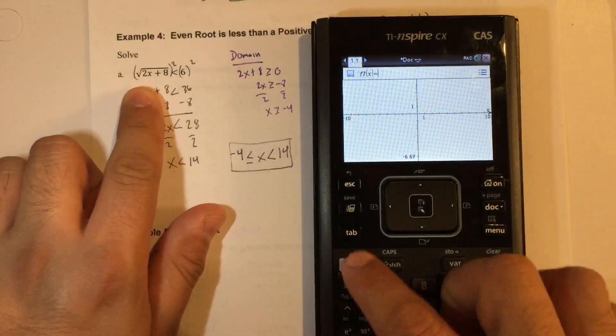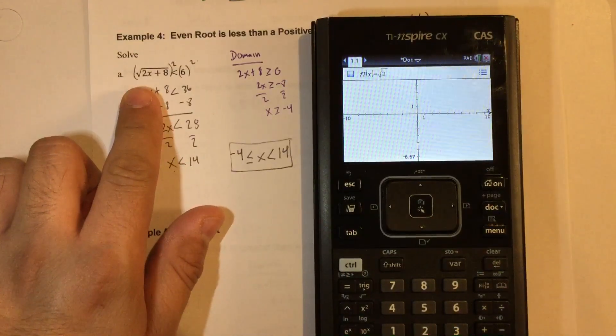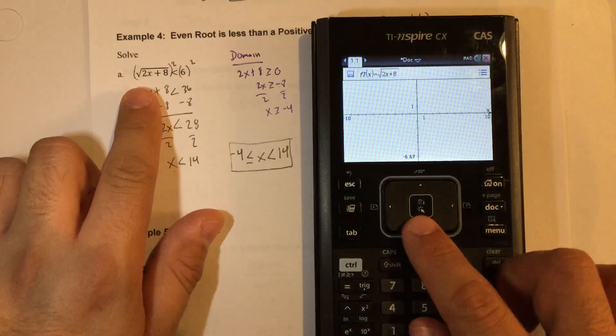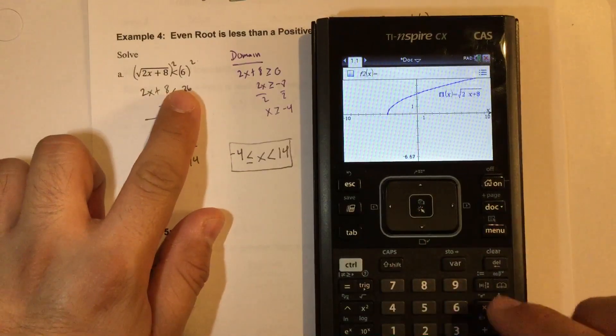Left side, square root of 2x plus 8. Enter or arrow down, and then we have 6.